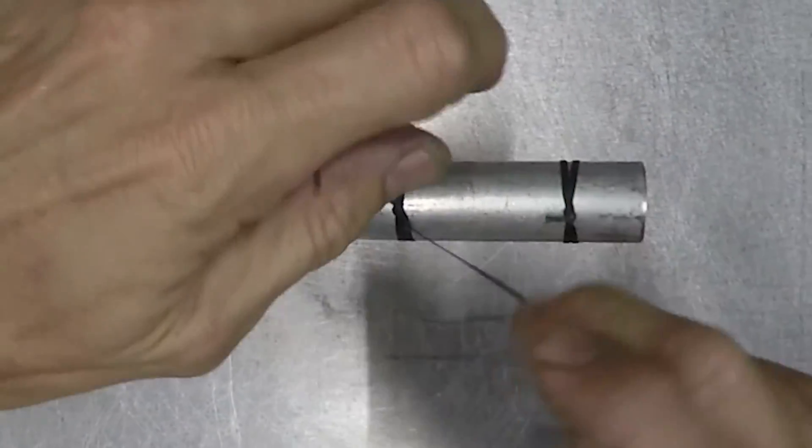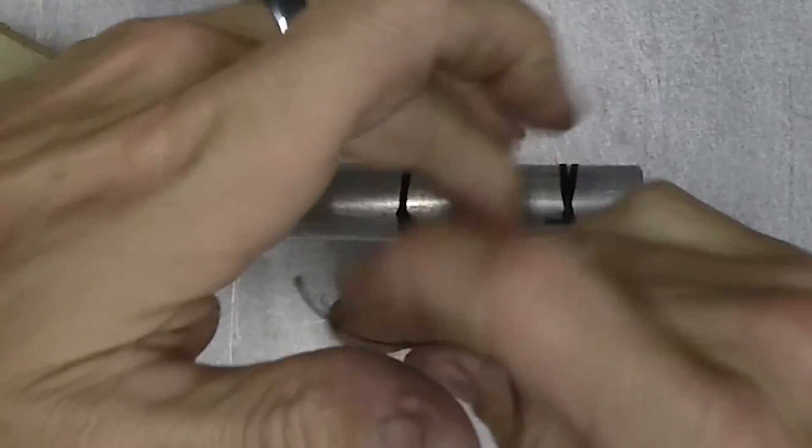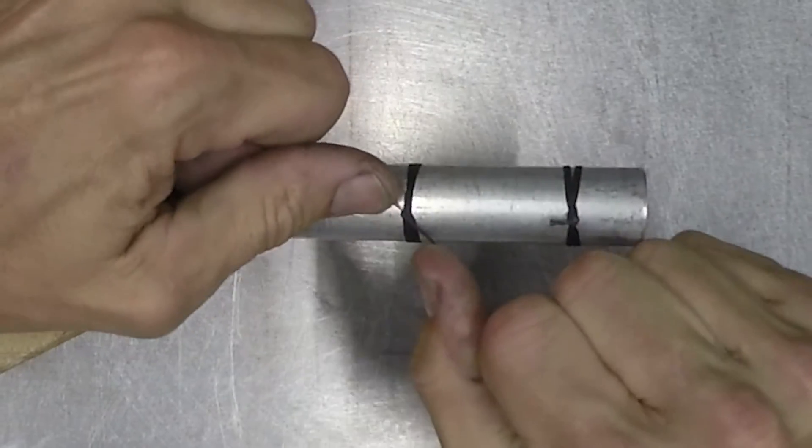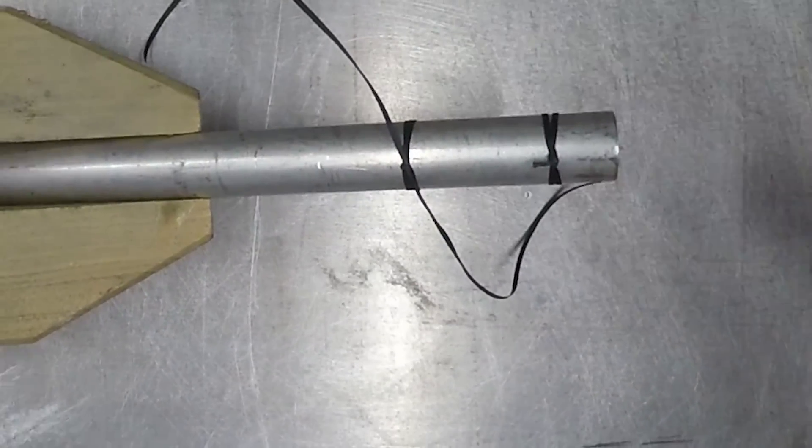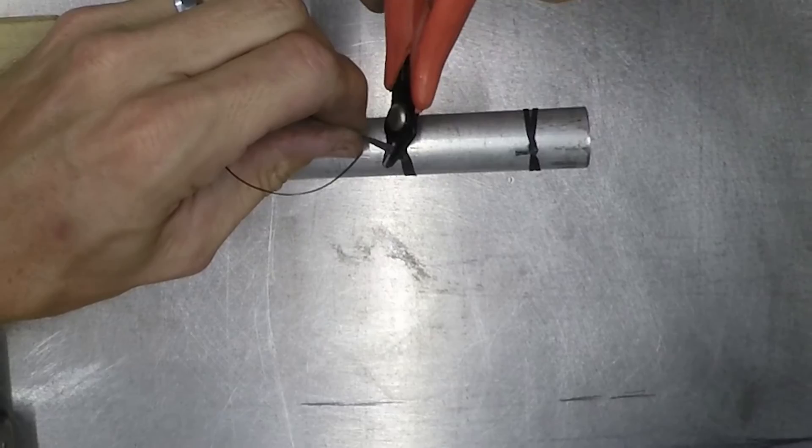What we're going to do is tie an overhand knot, like that, and another one on top of it, like that. Trim off the two ends.